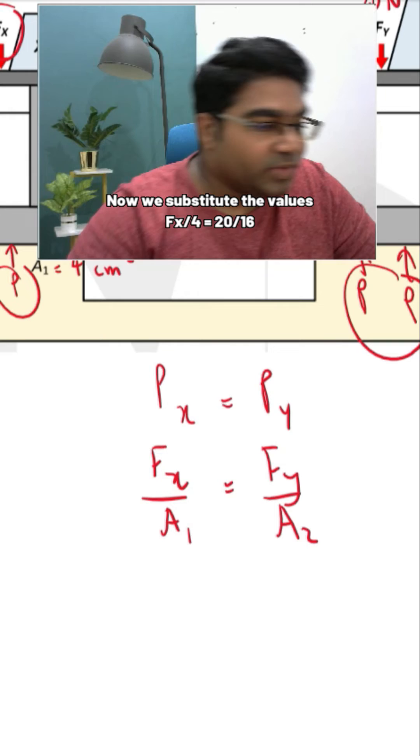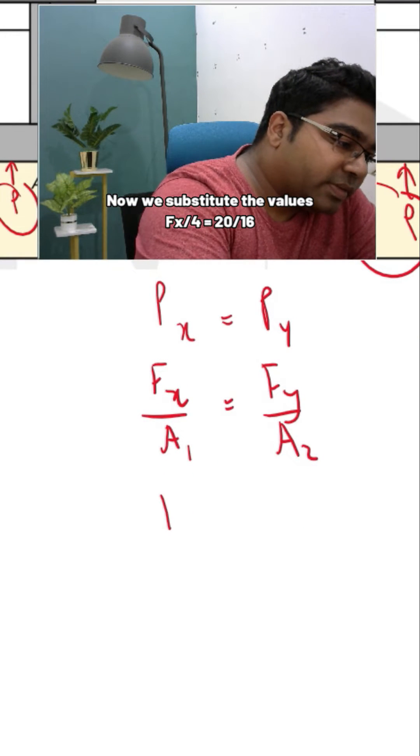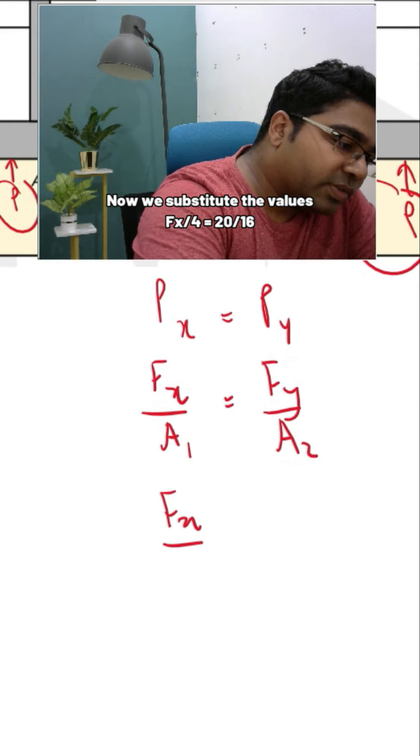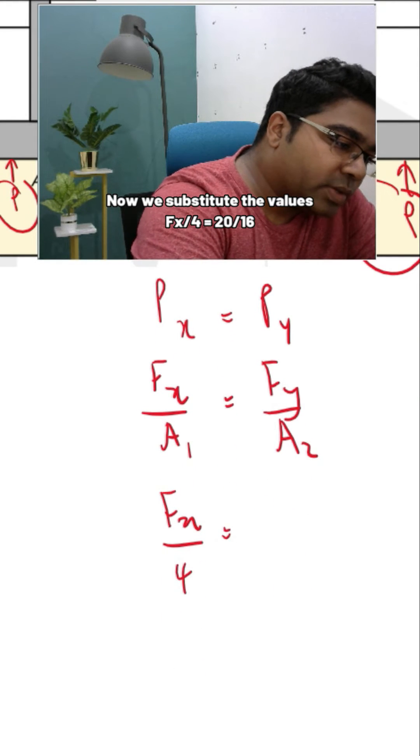Now we substitute the values. So fx over this area here is 4 centimeters square equals to fy.